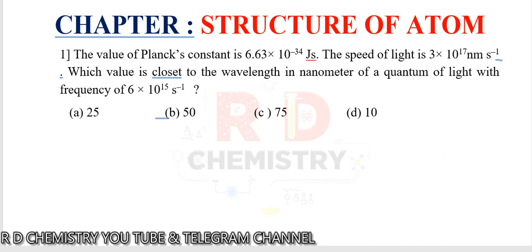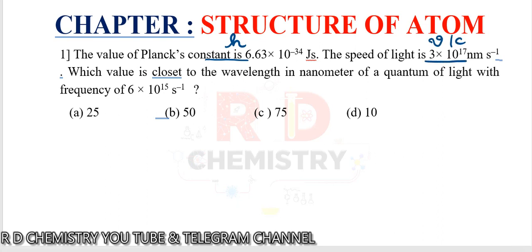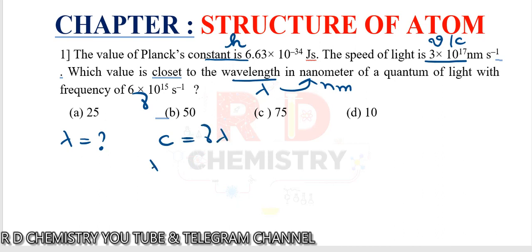Question number 1. The value of Planck's constant is given. The speed of light, velocity c, is given as 3 × 10^17 nanometers per second. We have to calculate the wavelength lambda in terms of nanometers of a quantum of light with frequency nu given. We can use the formula c = νλ, therefore lambda = c / ν.